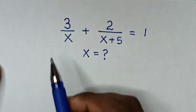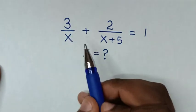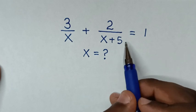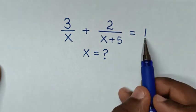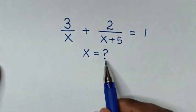Hello, how to solve 3 over x plus 2 over x plus 5 is equal to 1, to find the values of x from this equation.